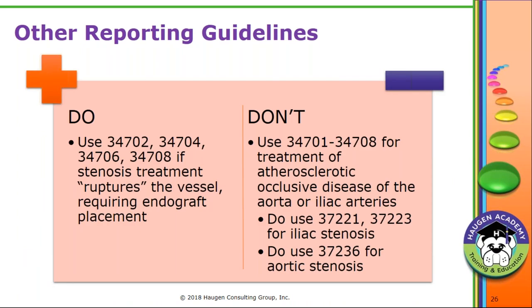Additional reporting guidelines: rupture codes 34702, 34704, 34706, or 34708 may be used if a treatment ruptures the vessel during the procedure. Do not use EVAR codes for atherosclerotic occlusive disease of the aorta or iliac arteries—use 37221/37223 for iliac stenosis and 37236 for aortic stenosis. Always check the indication to determine why the procedure is being performed.